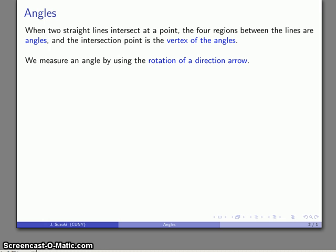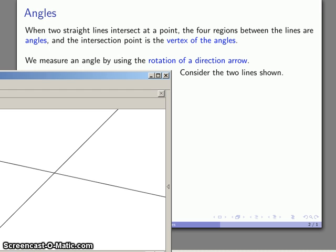If you want to measure what the angle is, we're going to measure it by the rotation of what we can think about as a direction arrow. So, for example, consider two straight lines like this.